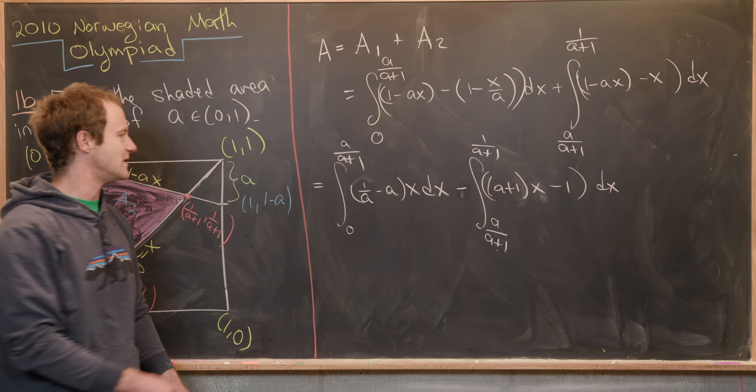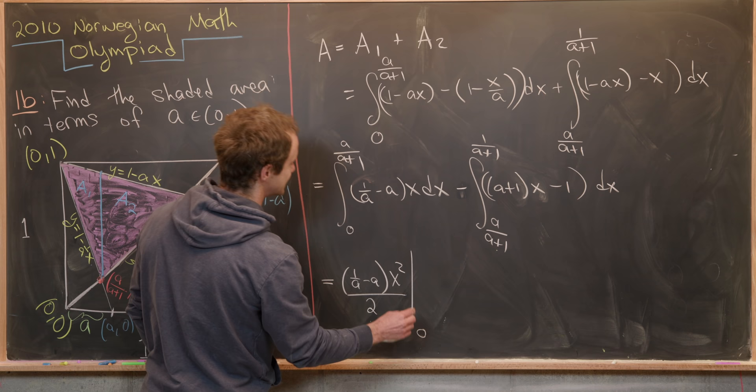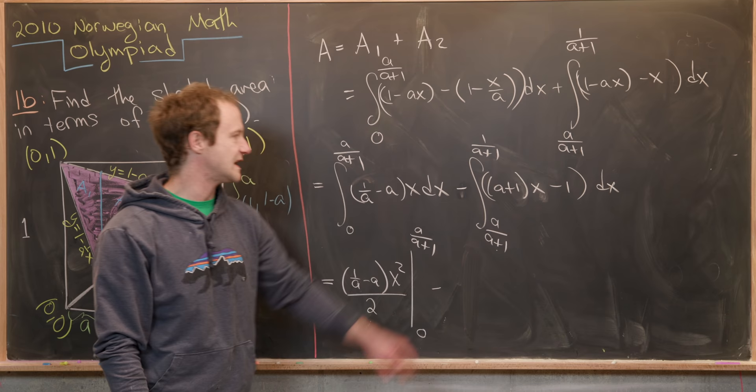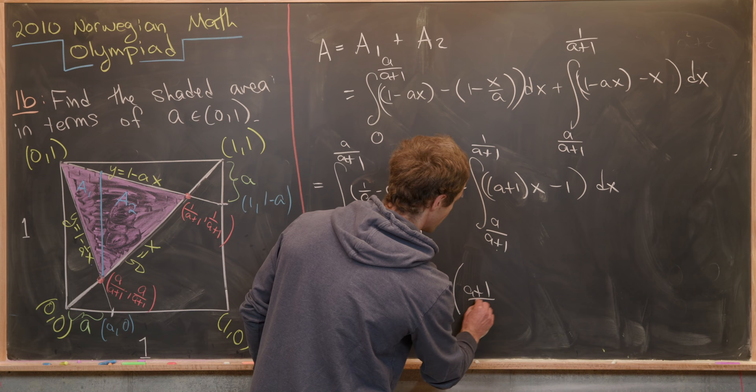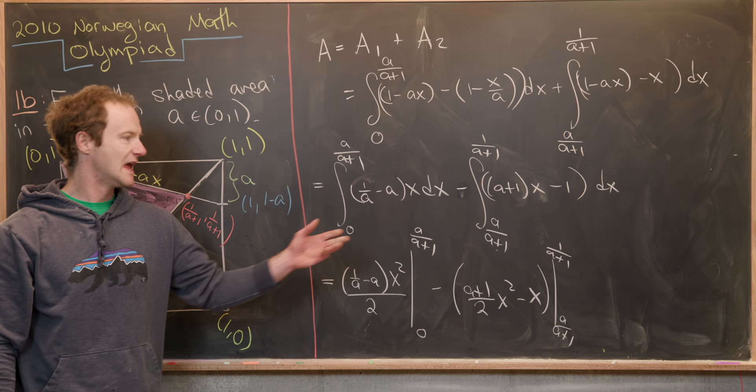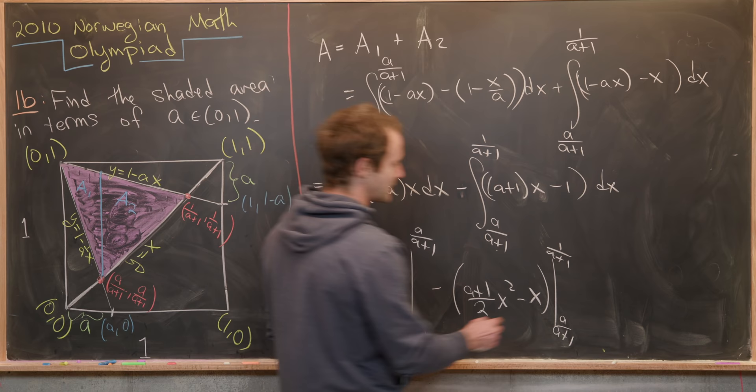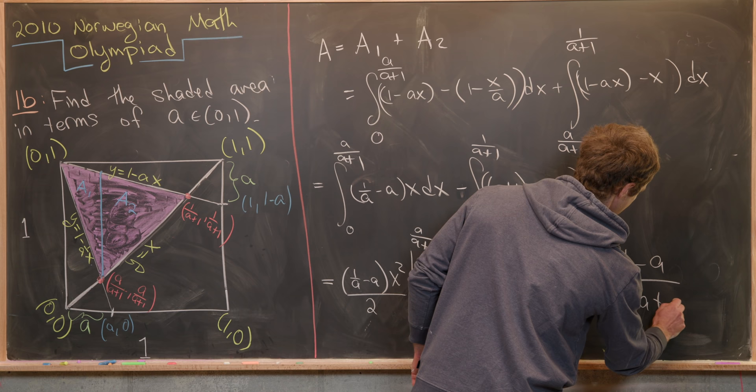So taking the antiderivative here, we'll have 1 over A minus A times X squared all over 2. We need to evaluate that from 0 up to A over A plus 1. And then we'll subtract from that what we get from evaluating this integral. So that will be A plus 1 over 2 times X squared minus X. And then we need to evaluate that from A over A plus 1 to 1 over A plus 1. And at this point, it's just kind of a messy game of symbolic manipulation. So I'll let you guys work that out because there's nothing fancy going on there. And what you end up getting is 1 minus A over 2A plus 2. And so that's the final answer for this.